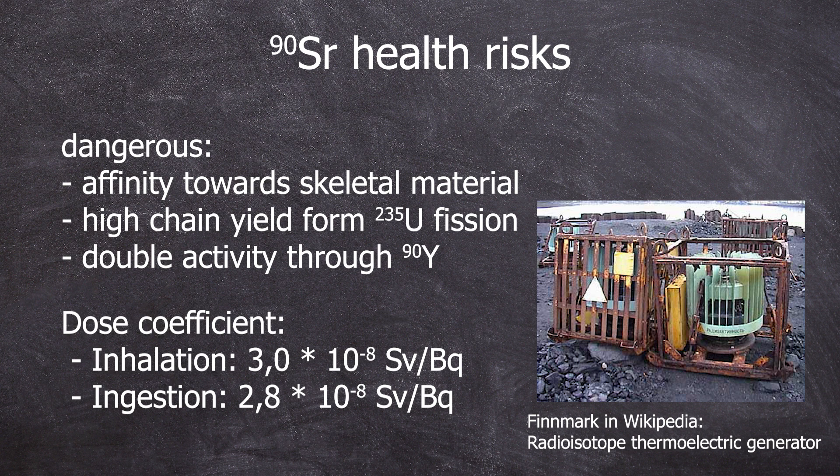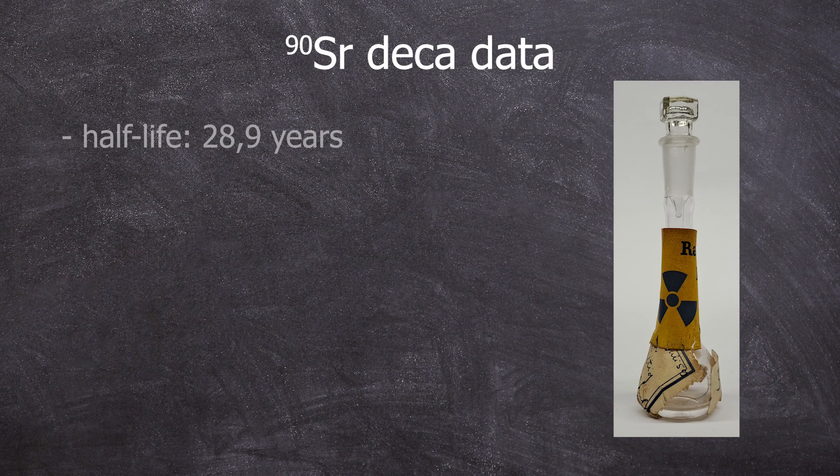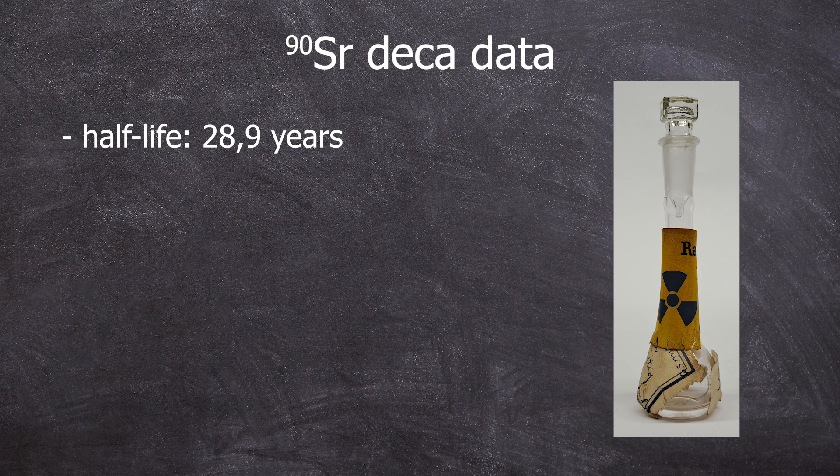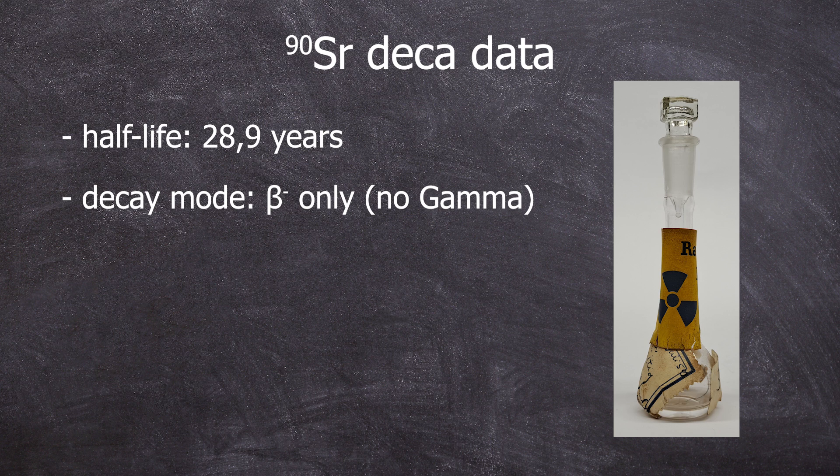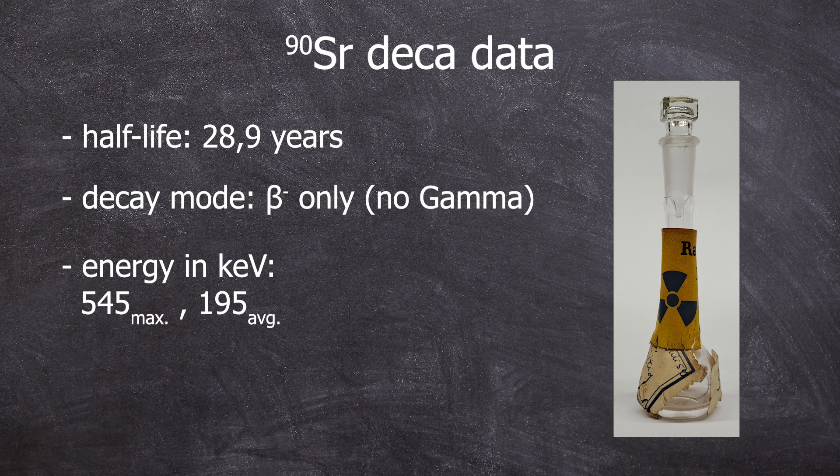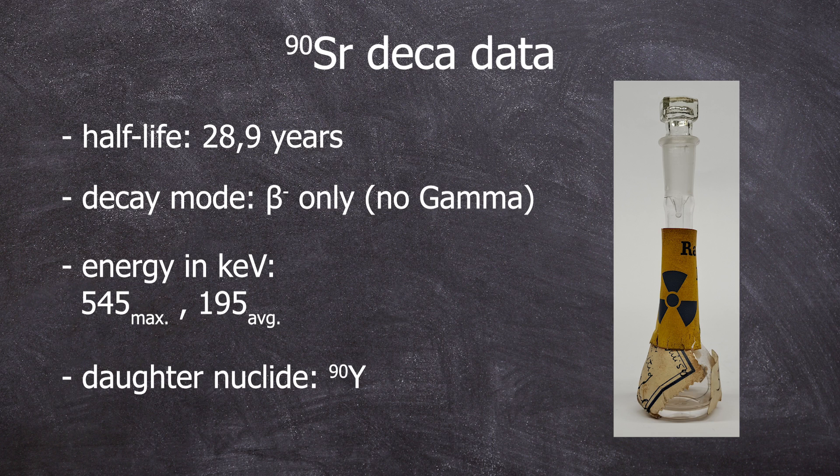I won't go much further into detail. This was just a brief introduction to our radionuclide here. Let's go over the decay data. Half-life 28.9 years. It decays via beta minus and in this case without associated gamma lines. So it's a true beta only emitter. These beta particles have an average energy of 195 kiloelectron volts and a maximum of 545 kiloelectron volts. Not exceptionally high. It decays into radioactive yttrium-90.